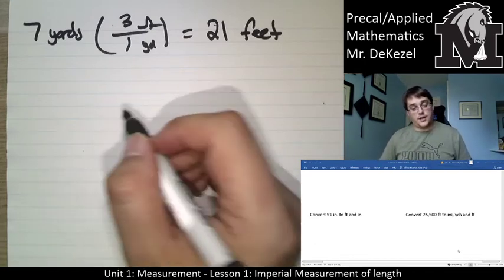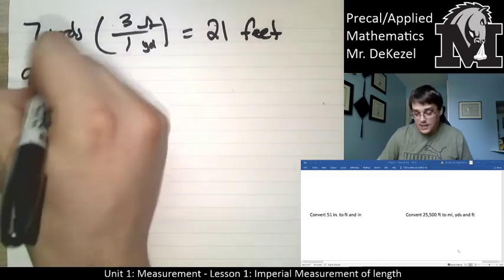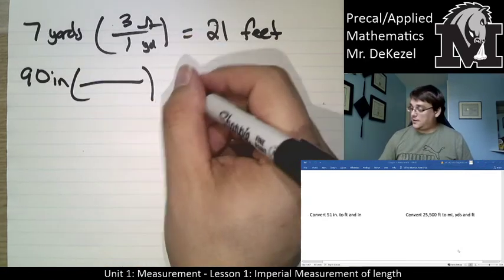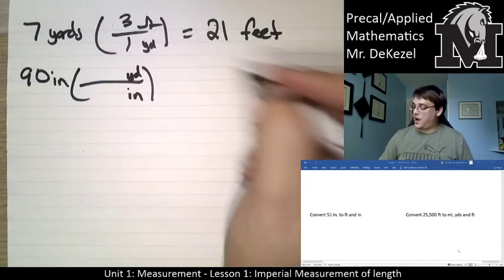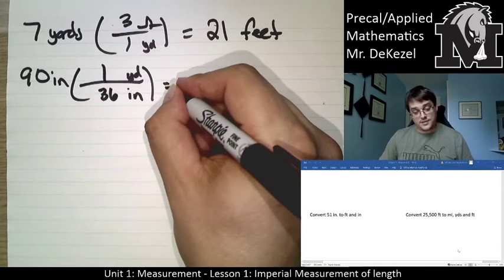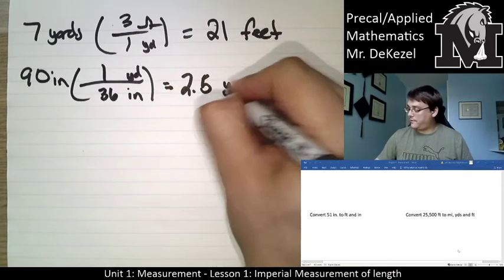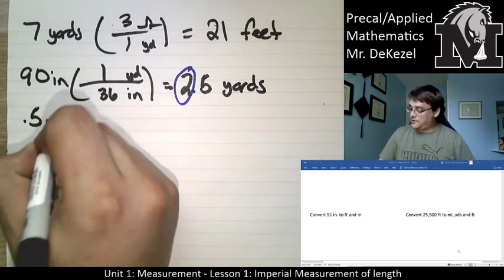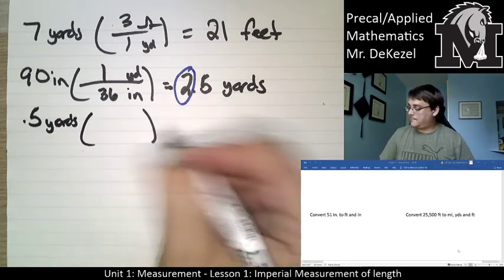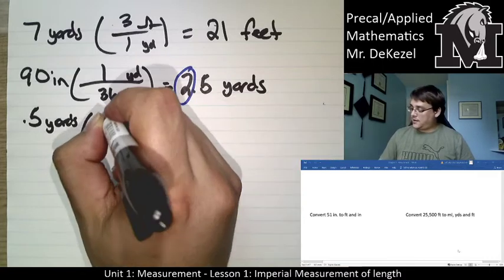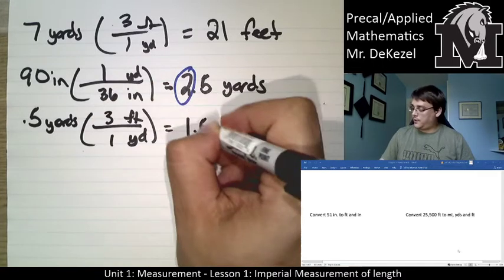Now let's convert 90 inches to yards, feet, and inches. We've got 90 inches — convert to the largest unit first. We've got yards on top; there are 36 inches in one yard. So 90 divided by 36 gets us 2.5 yards. So we know it's going to be 2 yards. Now let's find out the feet from that 0.5 yards: we want feet, we're in yards, and there are 3 feet in one yard — so that's 1.5 feet.